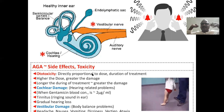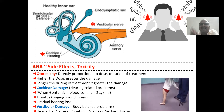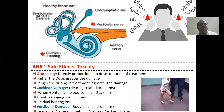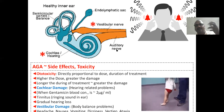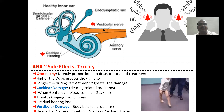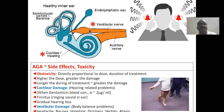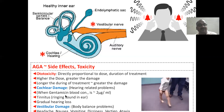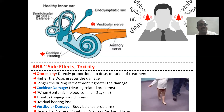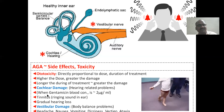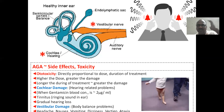The problem of aminoglycosides: ototoxicity. The vestibulocochlear nerve — this is the cochlear nerve responsible for hearing, and this is the vestibular nerve responsible for body balance. Both together form the auditory nerve. Cochlear nerve damage causes hearing-related problems. When gentamicin blood concentration is more than 2 micrograms per ml — very, very important — tinnitus, ringing sound in the ear, and gradual hearing loss occur. Vestibular damage causes headache, nausea, vomiting, dizziness, vertigo, ataxia — cross-walking — body balance problems.